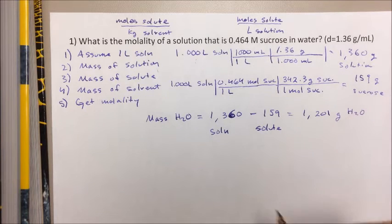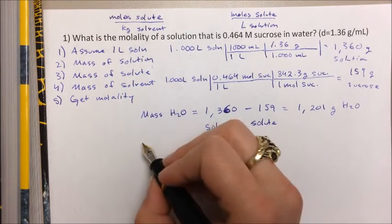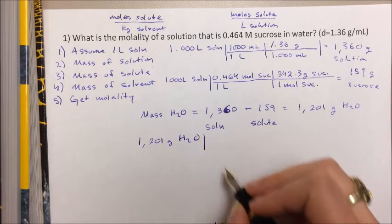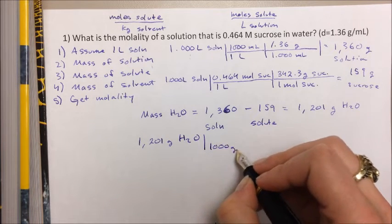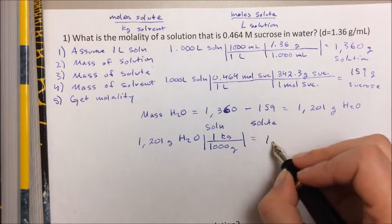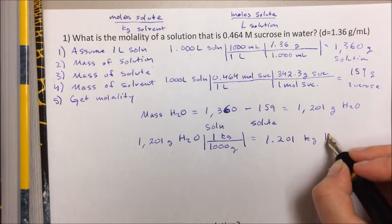We can convert that to kilograms pretty readily. 1,201 grams of H2O, 1,000 grams to 1 kilogram. So we have 1.201 kilograms of H2O.